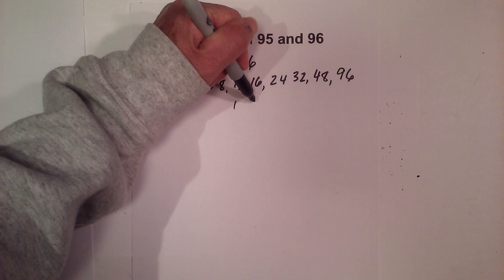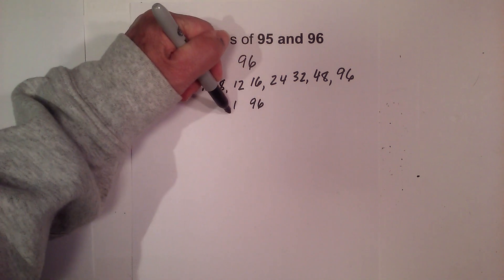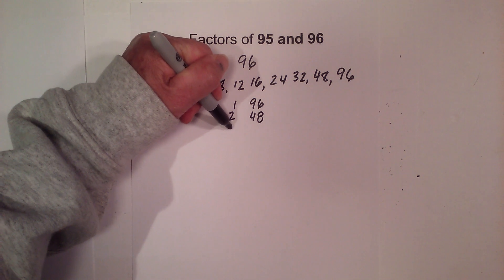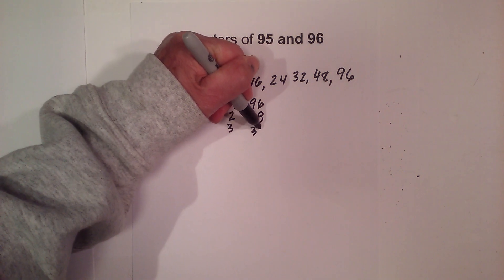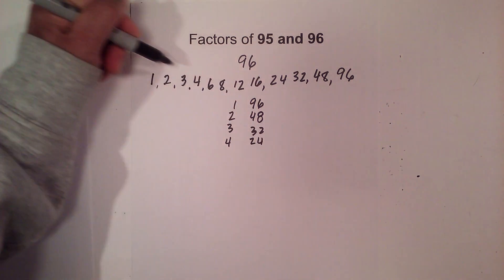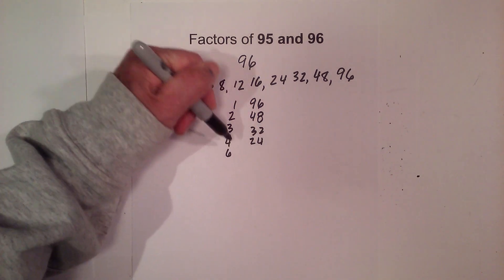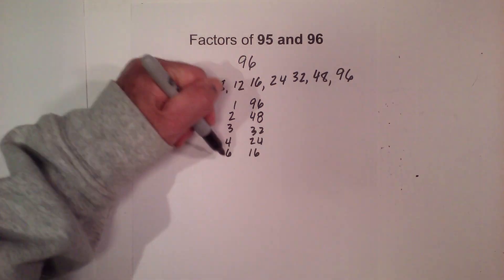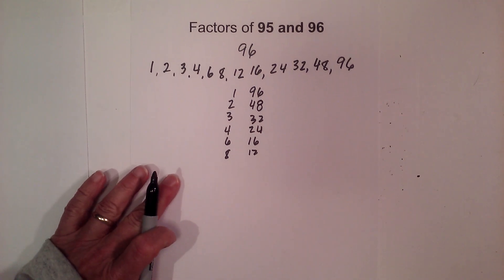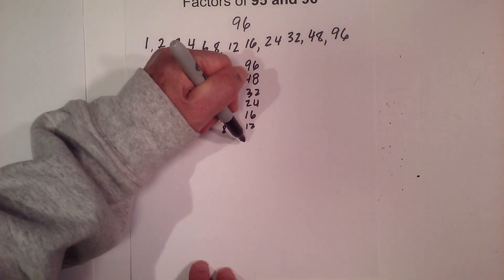The pairs of numbers are 1 and 96, 2 and 48, 3 and 32, 4 and 24, 6 and 16, and then 8 and 12. Now to complete a factor tree for 96, let's do this.